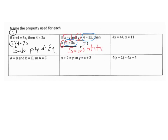For substitution, you don't write substitution property of equality — you just write substitution. The third one is a little easier to see: we solved for x, so we did the division property of equality. Write division property of equality. Next line: if a equals b and b equals c, then a equals c — this is the transitive property.